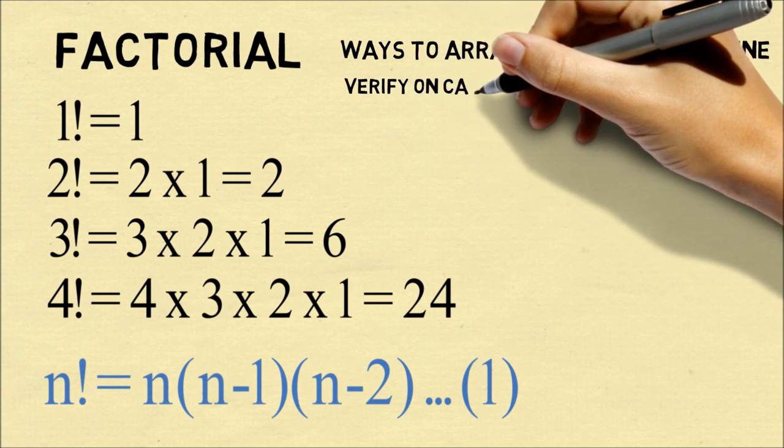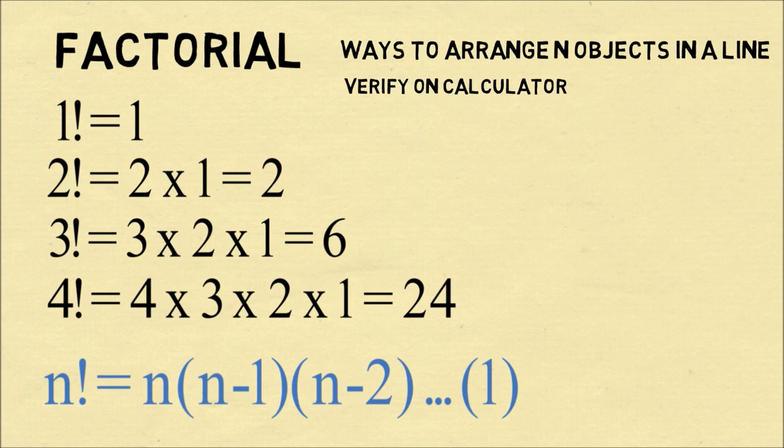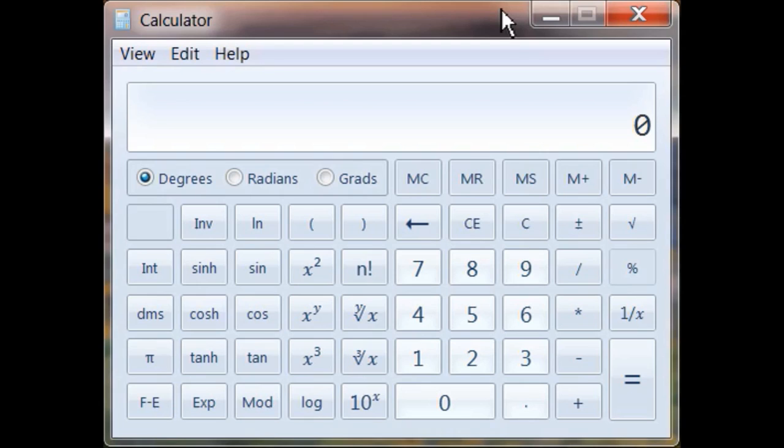So let's play around with the calculator and verify some of these calculations. We'll start out by trying 1 factorial. We'll press 1 and then the factorial to get an answer of 1. We'll then do 2 factorial, that's equal to 2, 3 factorial is equal to 6, and 4 factorial is equal to 24. So everything is as we expected.